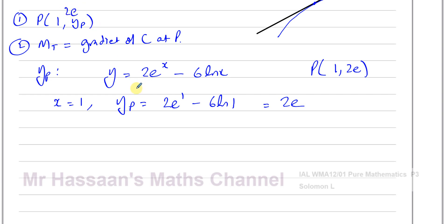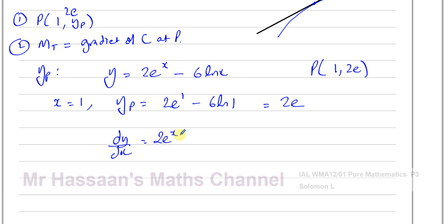Now we need to find the gradient of C at P. To do that, we need to find dy/dx — the gradient function. When you differentiate 2e to the power of x, it doesn't change — it stays the same: 2e to the power of x. And when you differentiate ln(x), you get 1 over x.